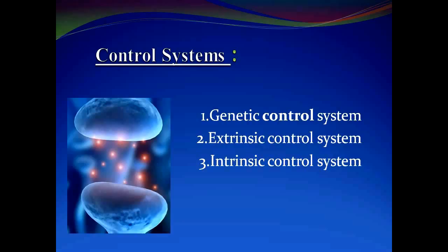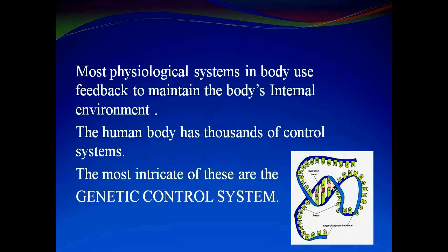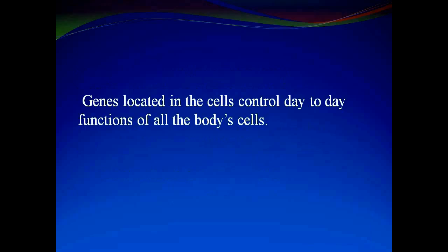Looking at the genetic control system, most physiological systems in our body use feedback to maintain the body's internal environment. The human body has thousands of control systems, and the most intricate of these are genetic control systems. The genes are located in cells and control the day-to-day functions of all the body's cells.